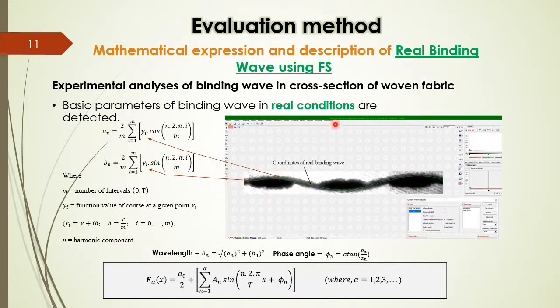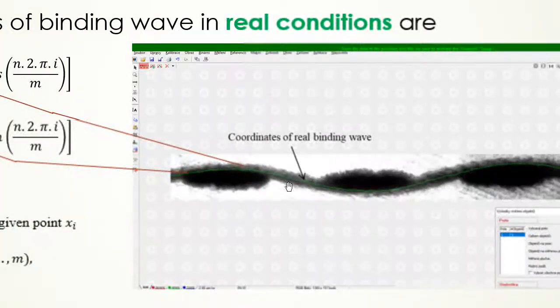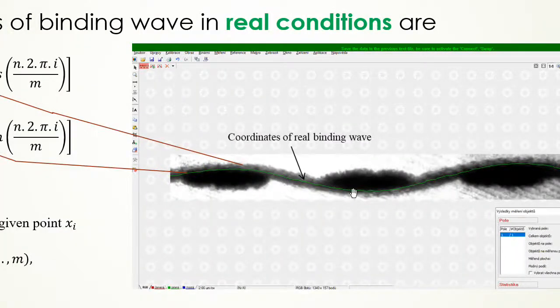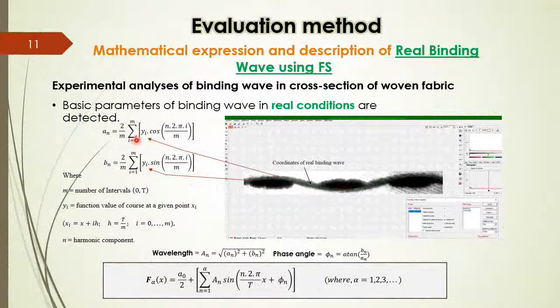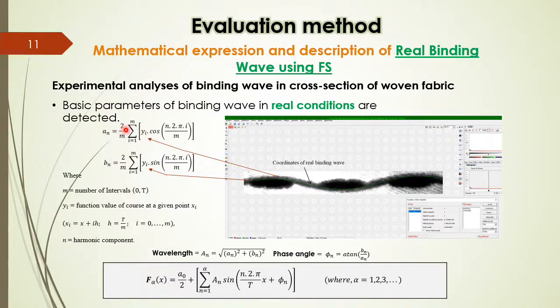So we have a real binding wave in which we have the coordinates of this real binding wave. We can use these real coordinates in our Fourier equation, and by using these coordinates we can approximate this real binding wave as well.